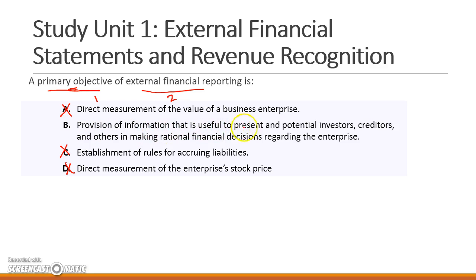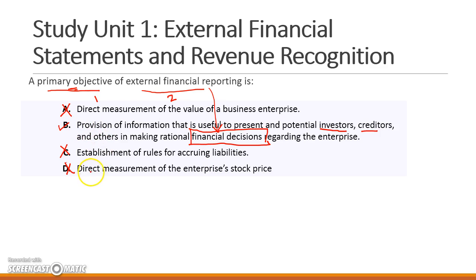Option B — provision of information that is useful to present and potential investors — is the correct answer. The primary objective of financial reporting is to ensure that users of financial statements get the correct information. Option B identifies the users as investors, creditors, and others, and explains that they need this information to make rational financial decisions. So Option B is the correct answer. I hope you understand this question.